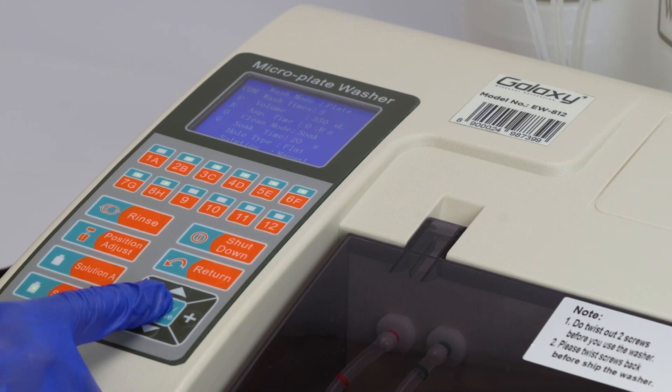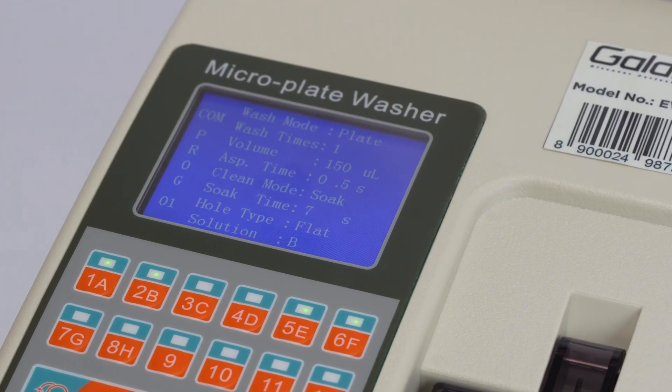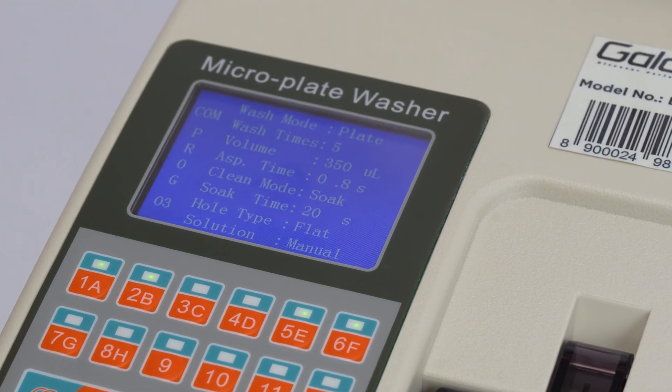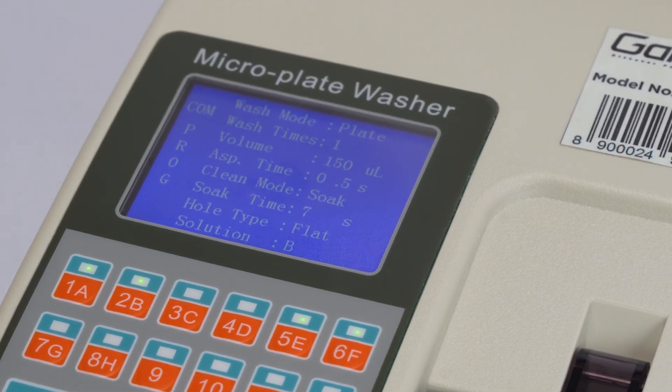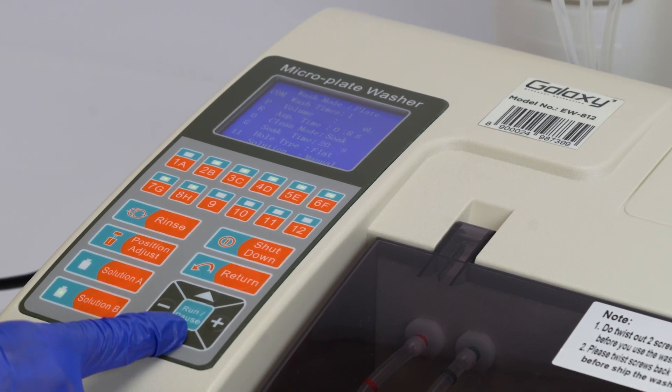To set the program, press the plus or minus key to choose the program number. You can save up to 99 custom programs. Use the up or down keys to adjust the parameters.